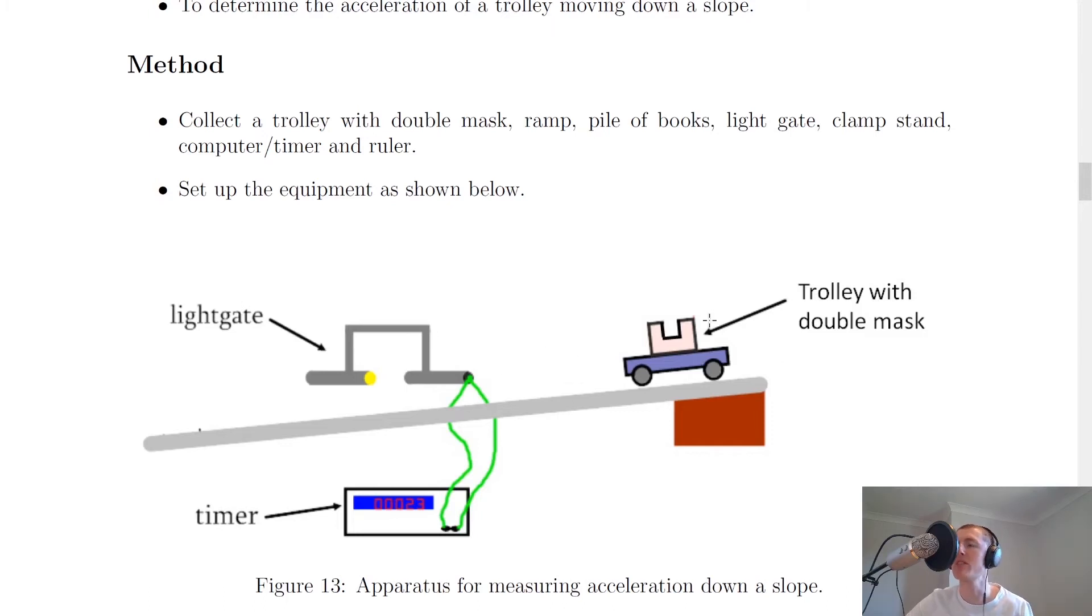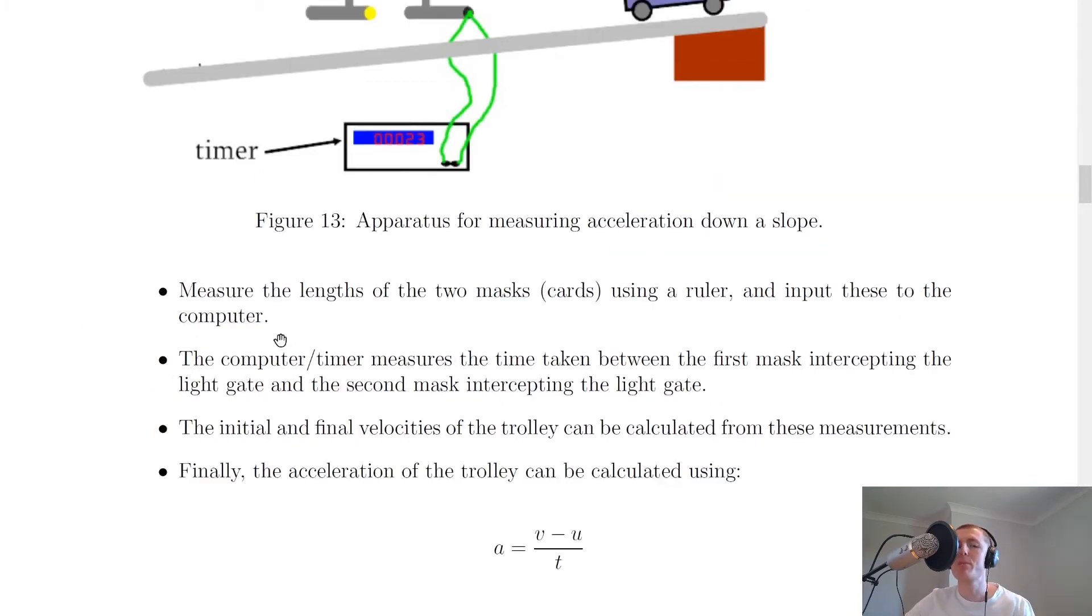Looking at the steps for the method, it says first of all measure the lengths of the two masks (the cards) using a ruler and then input these to the computer or the timer. Usually the timer or the computer, whatever you're using – if it's a TSA timer – should allow you to input your length of the mask into it.